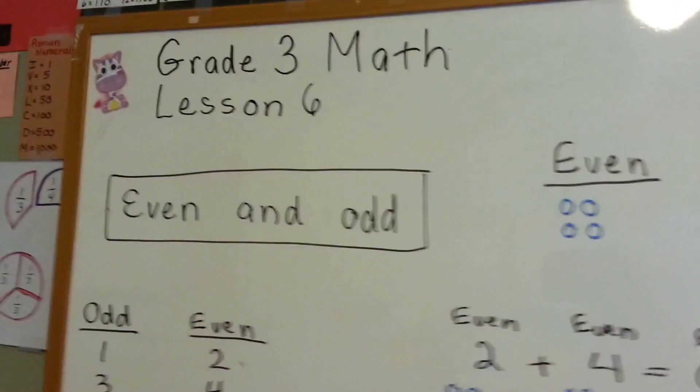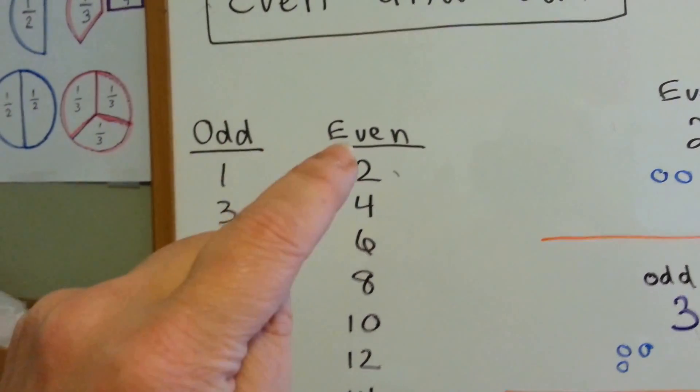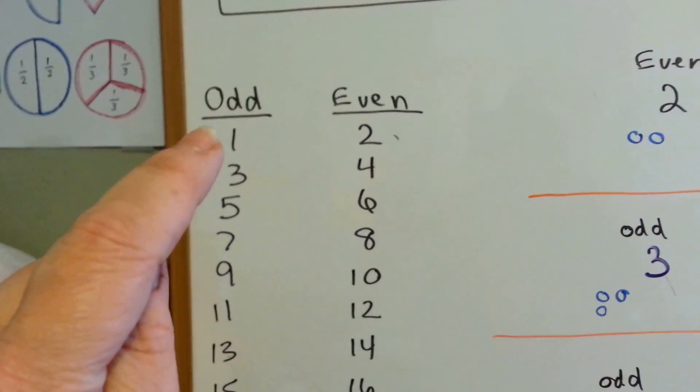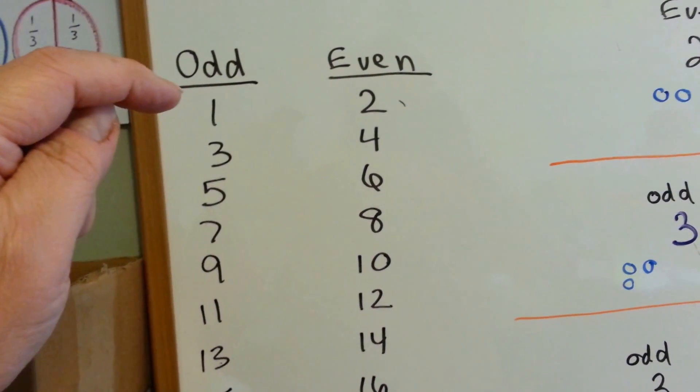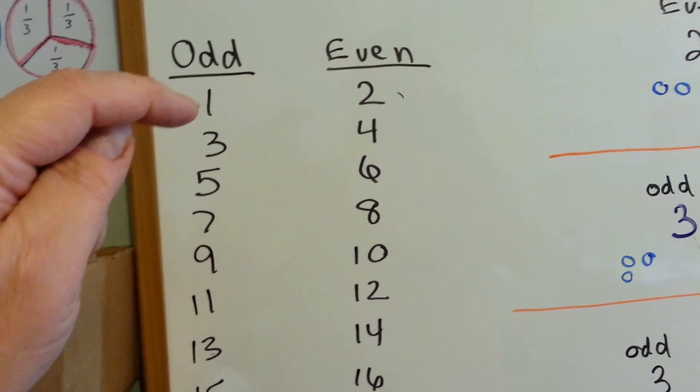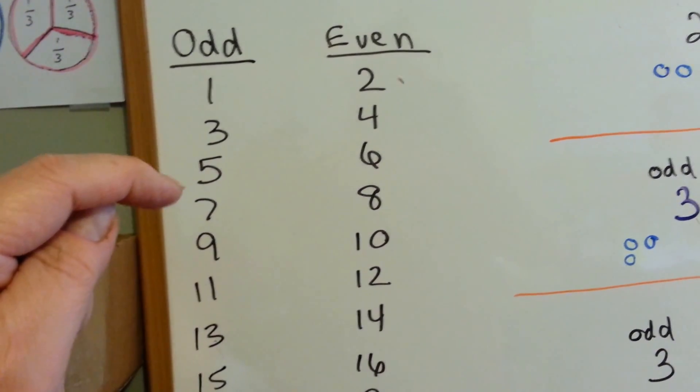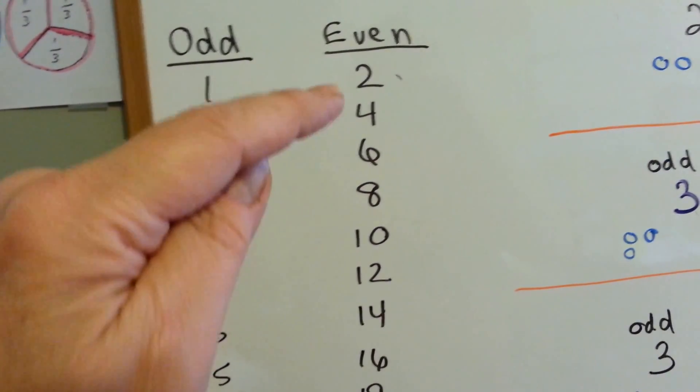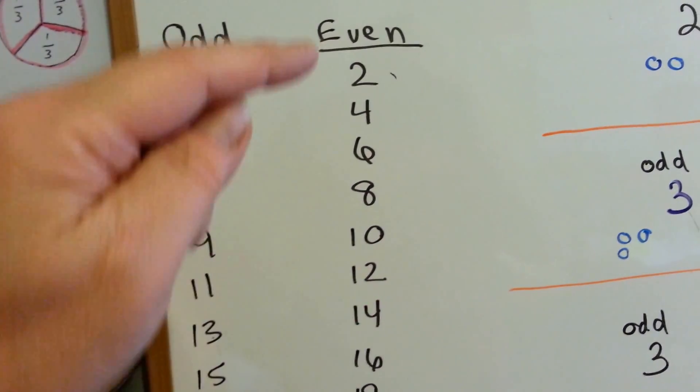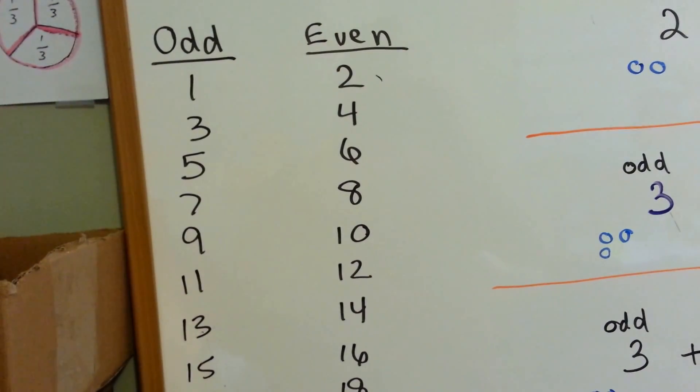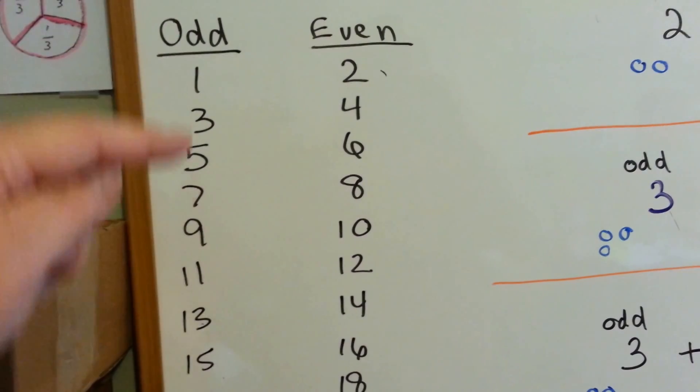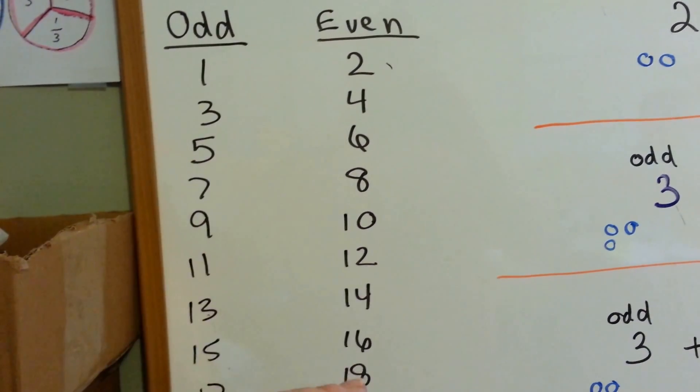When you're counting there's odd numbers and there's even numbers and it's almost like you're skip counting because on the odd side you would go from 1 to 3 to 5 to 7 to 9 because you're skipping the even numbers. And the same thing for the even numbers. When you count by the even numbers you're skipping the odd numbers. Now these are always odd and these are always even.